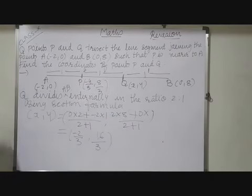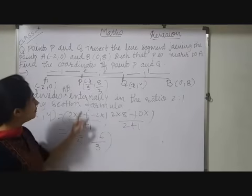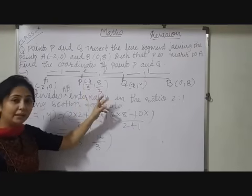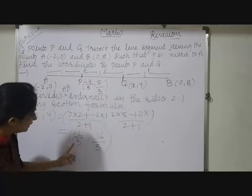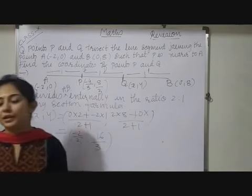So here children we have to conclude that thus coordinates of P and Q are minus 4 by 3 comma 8 by 3 and minus 2 by 3 comma 16 by 3 respectively. So hope it understood to you.